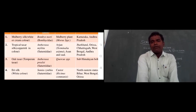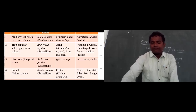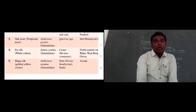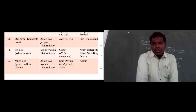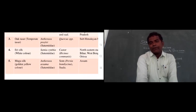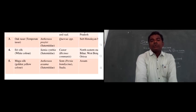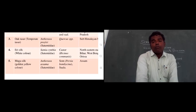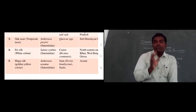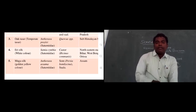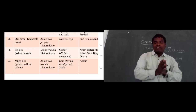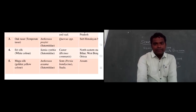The eri silk industry is located in the North Eastern states, Bihar, and West Bengal. Mooga silk, also called moonga silk, is golden yellow in color. The scientific name is Antheraea assamensis, family Saturniidae. This silkworm eats Som leaves — Persea bombycina — and Salu plant leaves. The mooga silk industry is mainly located in Assam.